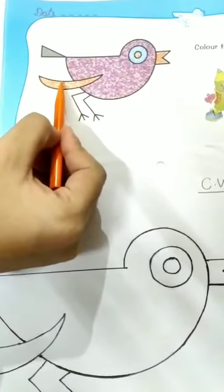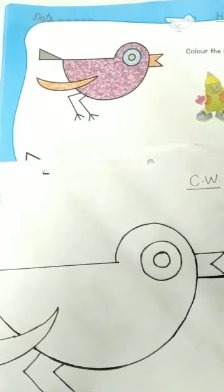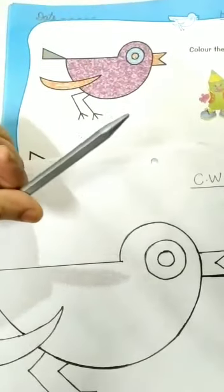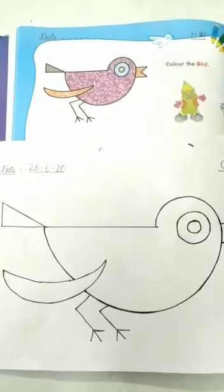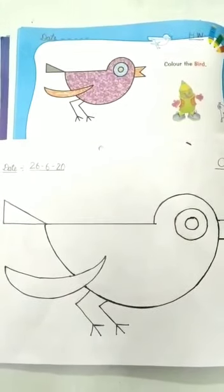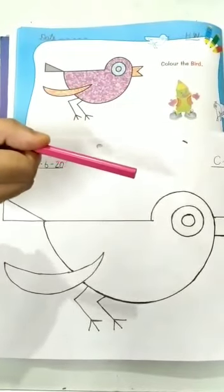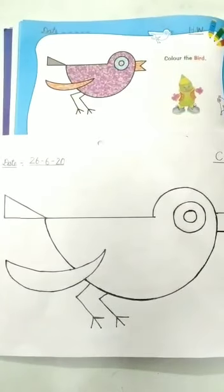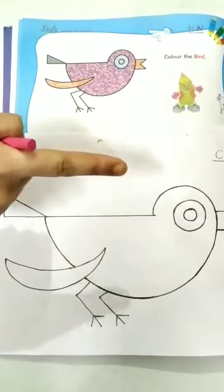At last, we will take out silver crayon for its tail. Now we will start coloring, but while coloring we have to follow the same rules. So number one, thick borderline. First of all, we will draw thick borderline in the bird.